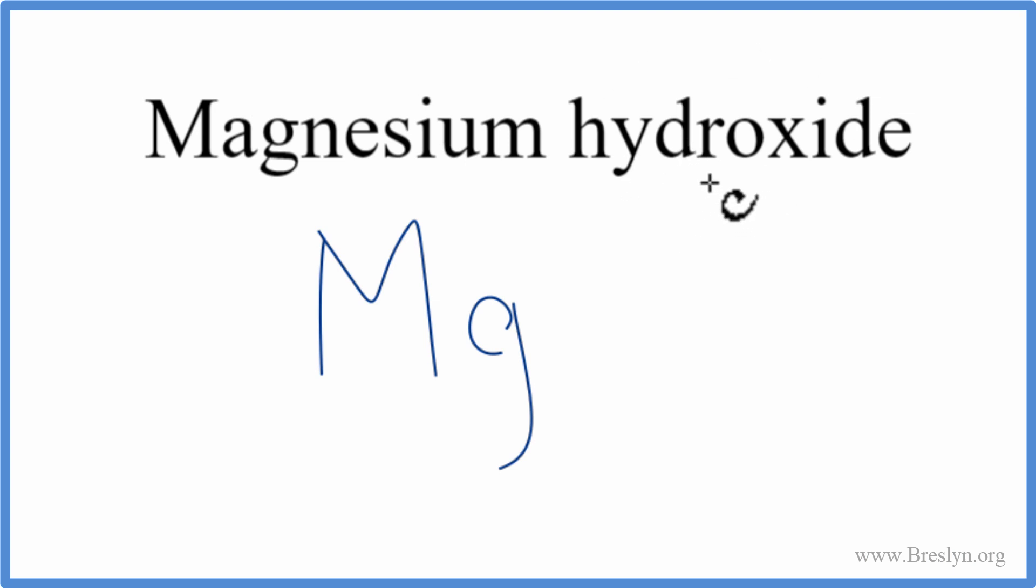In hydroxide, that's one you want to memorize. This is a polyatomic ion. When we look it up in a table of common polyatomic ions, we see it's OH, and it has a charge of 1 minus.